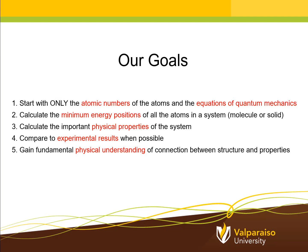When we use VASP to study a physical system, whether that's a molecule or a solid, what are our goals? Well, first we only want to start with the atomic numbers of the atoms and the fundamental equations of quantum mechanics — primarily the Schrödinger equation. With these starting points, we aim to calculate the minimum energy positions of all the atoms in the system, which is another way of saying determine the equilibrium structure of the system. Having determined the structure when the system is most stable, we want to calculate important physical properties. Some of these we will be able to compare to experimental results. And overall, the overarching goal is to gain fundamental physical understanding of the relationship between the system structure and its properties.